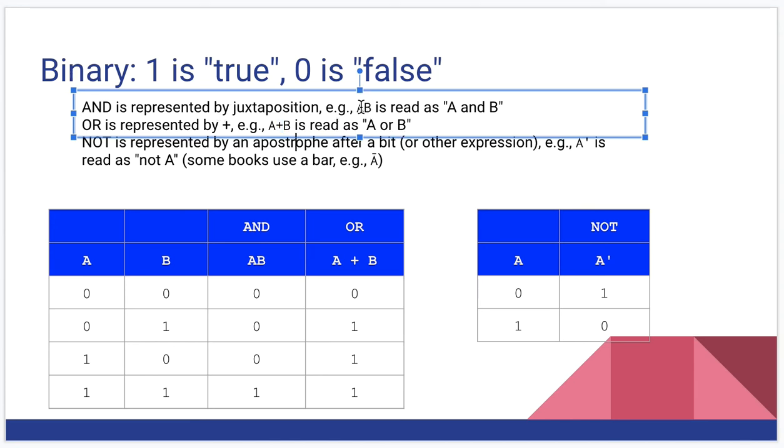And if you kind of look at it, and kind of looks like multiplication, or kind of looks like addition, and to an extent that idea holds out, but there'll be places where it doesn't. So it's really and and or. Not is represented as an apostrophe after a bit or other expression. So a apostrophe is read as not a, or the inverse of a. Some books and websites and things will also use a bar over an expression to represent not. I'm going to use apostrophe because it's a whole lot easier to type as I make my slides and stuff.